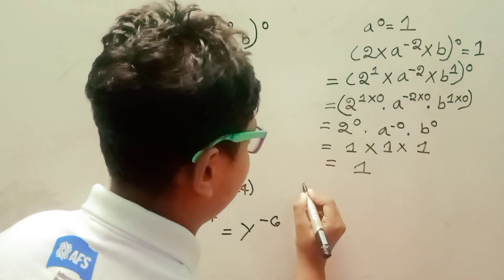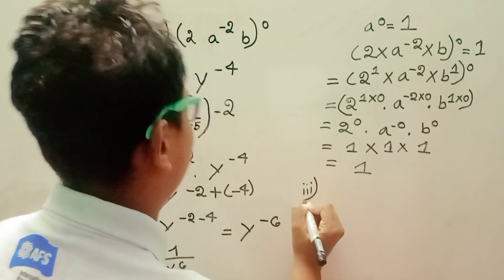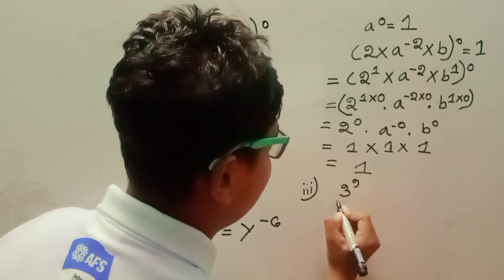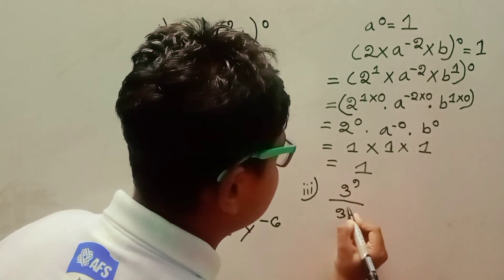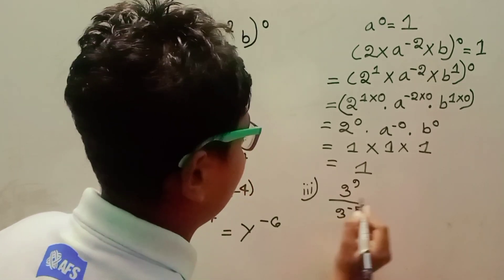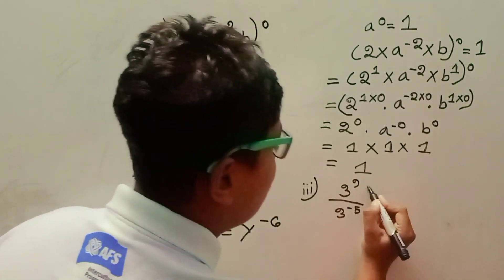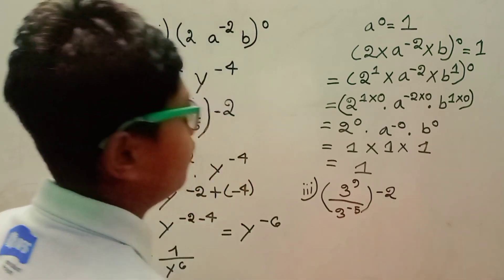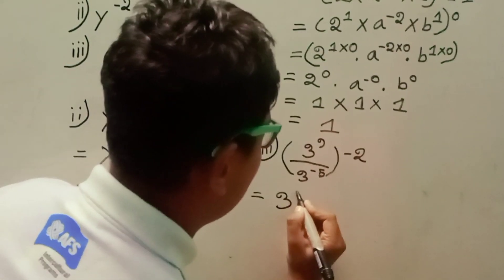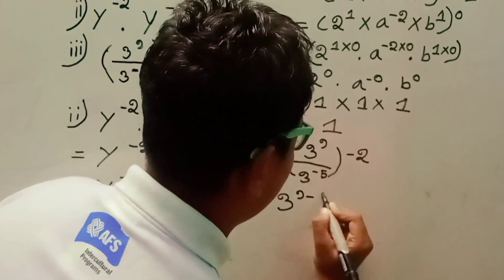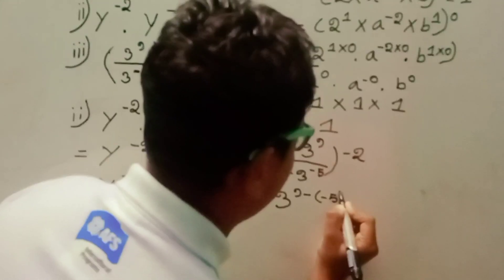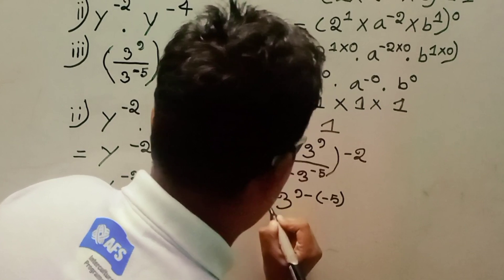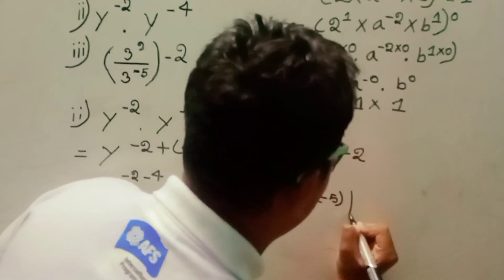Number three: c to the power 9 by c to the power minus 5, whole to the power minus 2. According to the exponent rule of division, equal to c to the power 9 minus bracket minus 5, whole to the power minus 2.